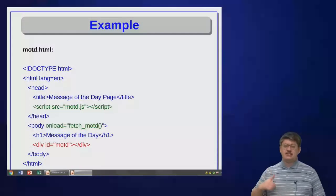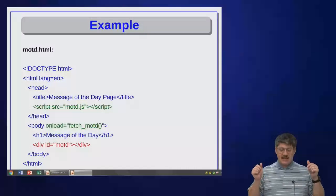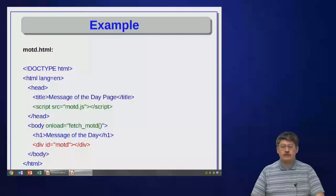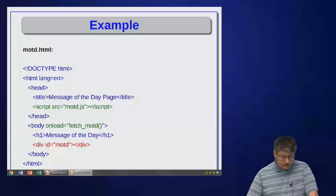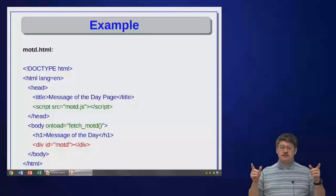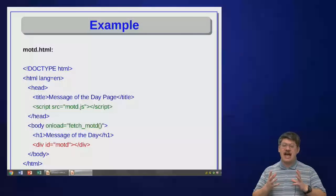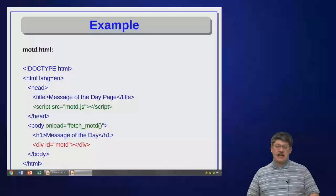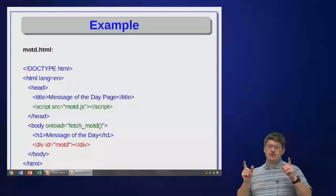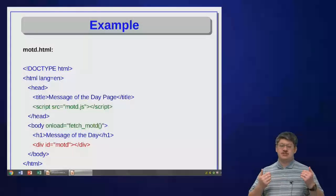Here's what the HTML looks like — motd.html with a standard doctype tag, HTML tag, head, and title. A script tag pulls in the JavaScript code from motd.js. In the body there's an H1 tag that says 'Message of the Day', and beneath that a div with ID 'motd' that's initially blank. When the JavaScript runs it fetches the message of the day from the server and fills in that div. The onload callback on the body tag is set to fetchMotd, which sends a request to the server. When the message of the day is received, the div is filled in.